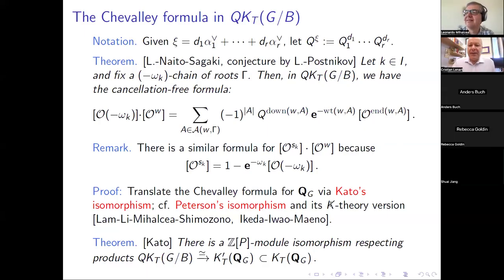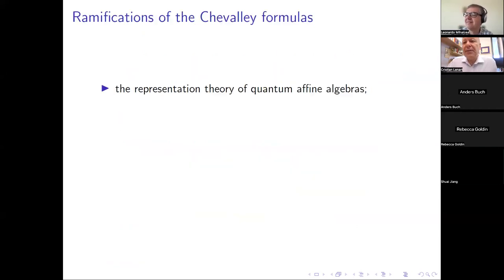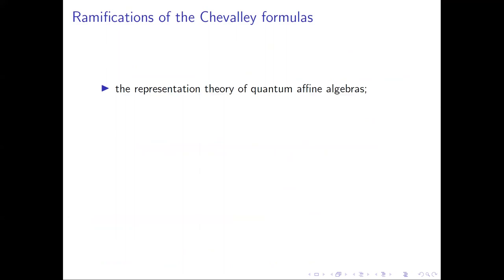Welcome to the second part of the Schubert seminar. I want to now explain the various ramifications of these formulas which we developed, and there is also some very recent work. First, I'll explain the link to representation theory of quantum affine algebras, which is actually the source of these formulas — the combinatorial models which first came up in representation theory that I started developing with Naito, Sagaki, Schilling, and Shimozono since about 10 years ago.